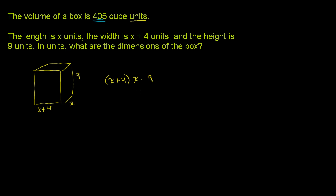That's literally the volume of the box. They also tell us that the volume equals 405. So now we just solve for x. If we distribute, let me rewrite it. This is the same thing as 9x times x plus 4 equals 405. 9x times x equals 9x squared. 9x times 4 equals 36x equals 405.